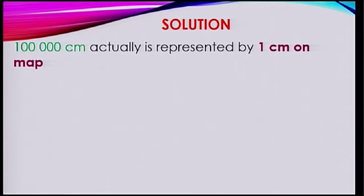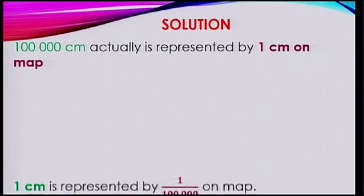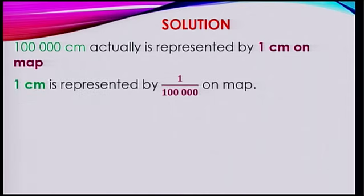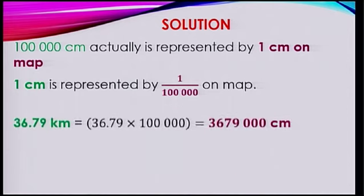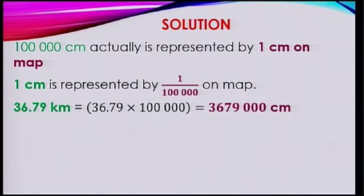Now, 100,000 cm actually is represented by 1 cm on the map. So 1 cm will be 1 over 100,000 on the map. So 36.79 km — first we convert it into cm. That will be 3,679,000 cm.